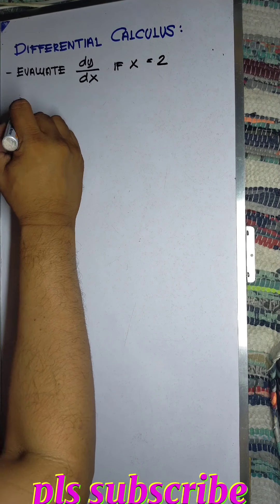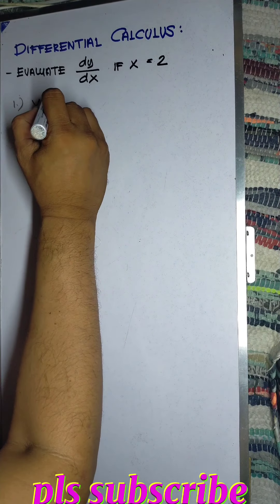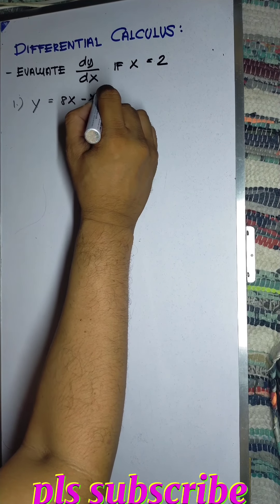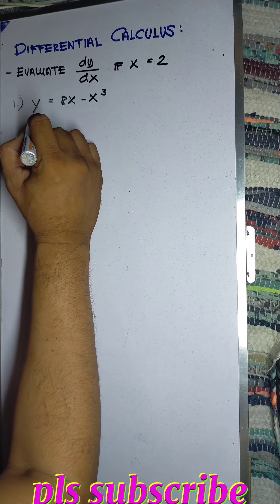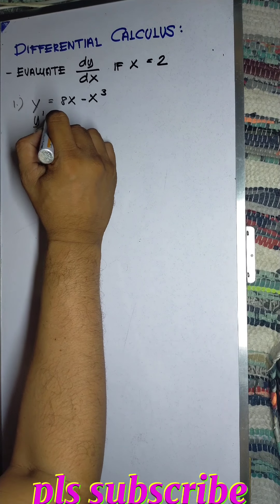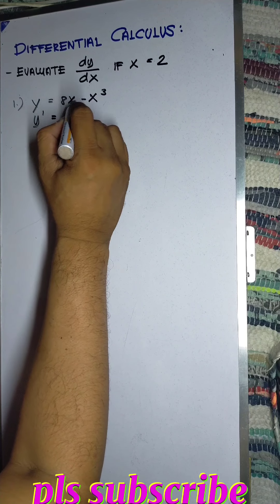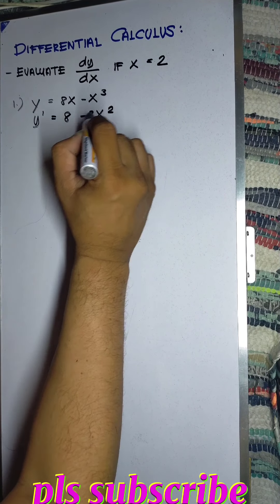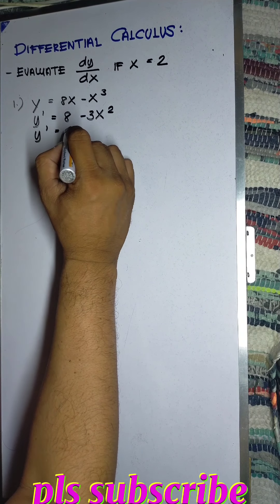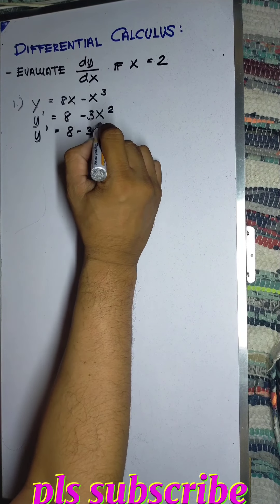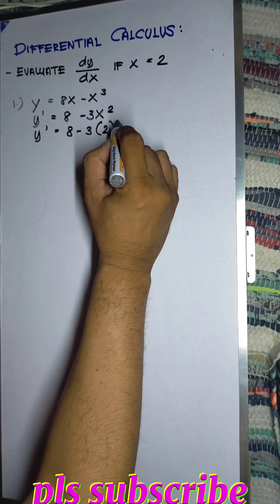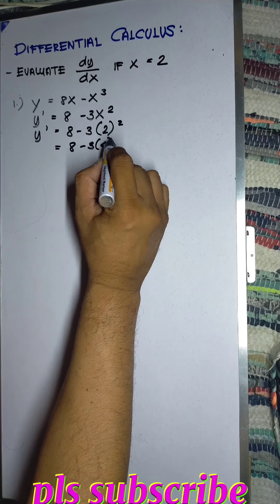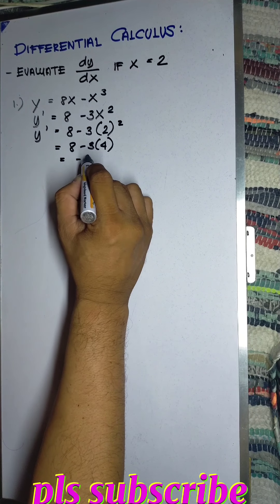First, y equals 8x minus x cubed. We take the derivative of this. So y prime is 8 minus 3x squared. Therefore, y prime at x equals 2 is 8 minus 3. You substitute the value of 2, so that will be 8 minus 3 times 4. The answer will be negative 4.